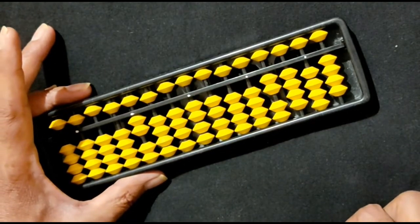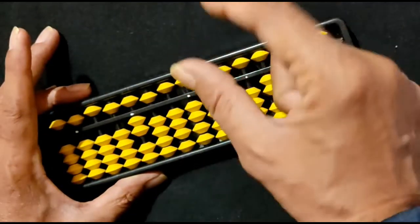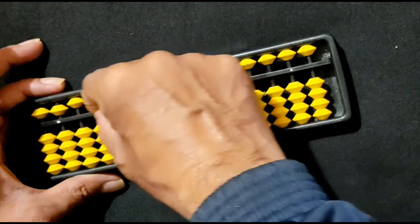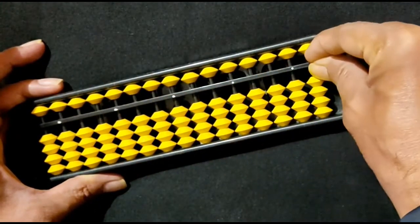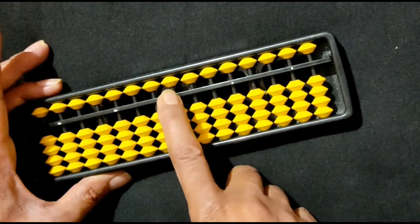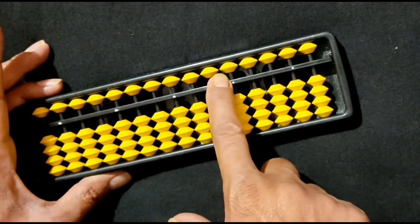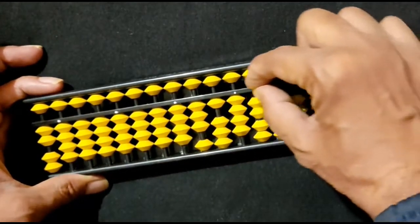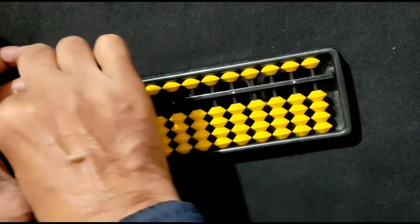And how to clean the abacus? Right hand like this, and we have to clean like this. When we clean the abacus, all beads should be away from the answer bar. Again, check it like this.